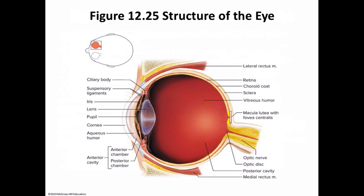In close vision and bright light, the sphincter pupillae — the circular smooth muscles — contract and the pupil constricts. In distant vision and dim light, the dilator pupillae — made up of radial muscles — contracts and the pupil dilates, allowing more light to enter. Sympathetic fibers control pupillary dilation — the sympathetic nervous system, the fight-or-flight system, is in control. Parasympathetic fibers control constriction — the parasympathetic nervous system is the rest-and-digest system.